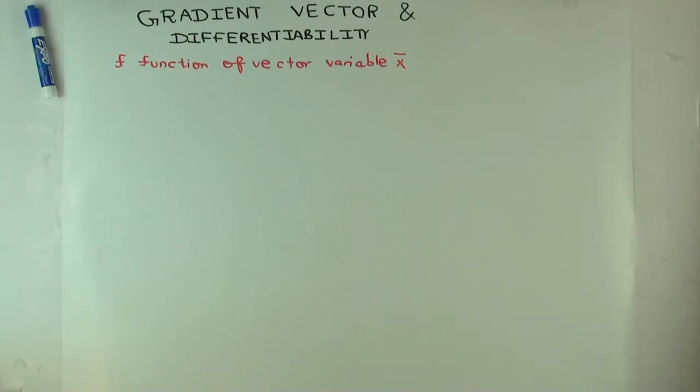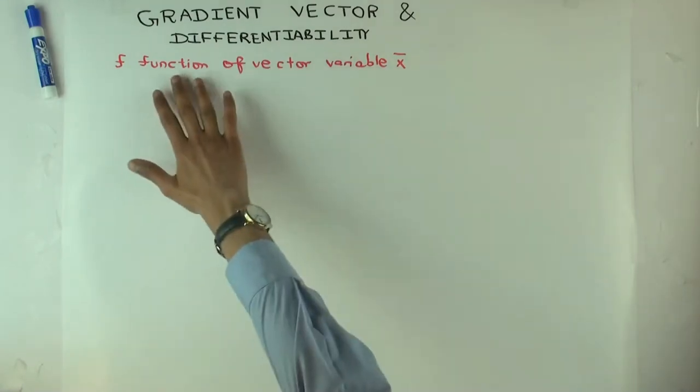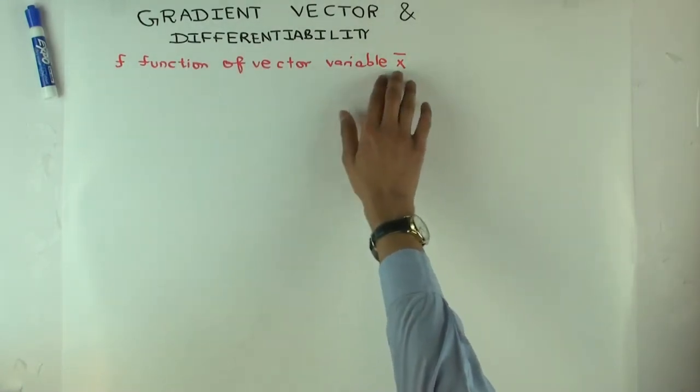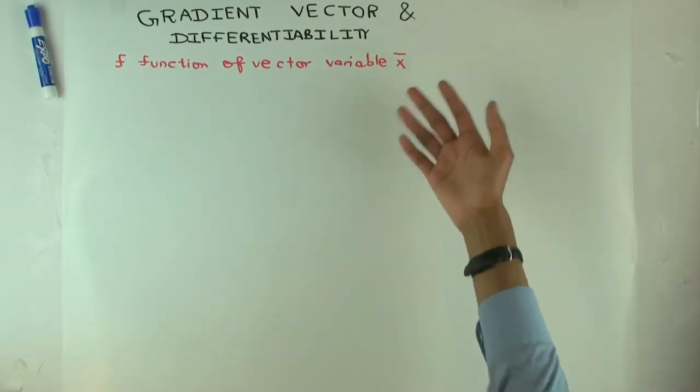Okay, so in this talk, I'm going to try to define a notion of differentiation for a function of a vector variable. Now, f is a function, the values are still real numbers, so the values of the function are still scalars, but the inputs are vectors, so you can think of this just as a function of many variables.